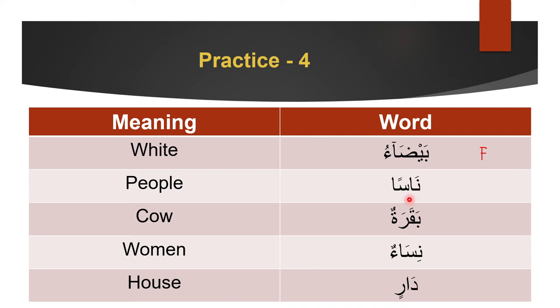Nās: you already know the meaning — it means 'people.' It's obviously plural but shows no signs of femininity, so this one is masculine.